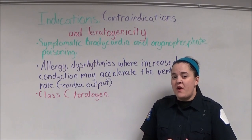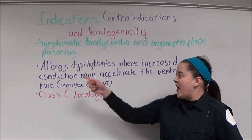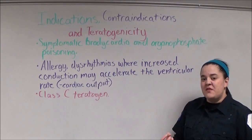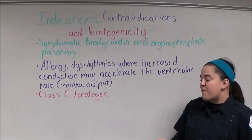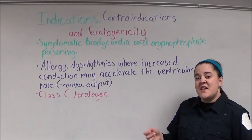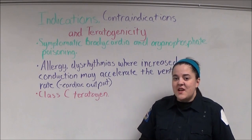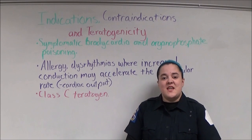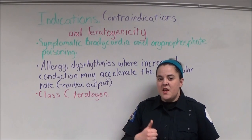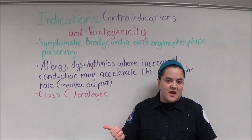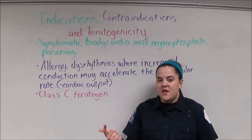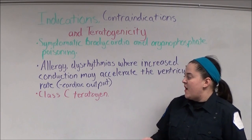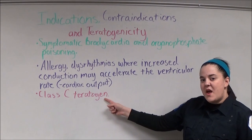Contraindications for atropine include allergy and dysrhythmias where increased conduction may accelerate the ventricular rate and therefore decrease cardiac output, such as atrial fibrillation and atrial flutter. Relative contraindications include patients in the setting of an MI or ischemia, patients with glaucoma, and those with a second or third degree heart block. Atropine is a class C teratogen.